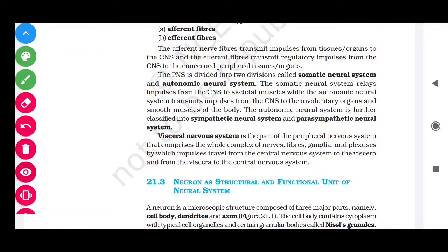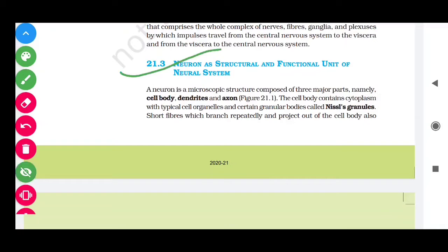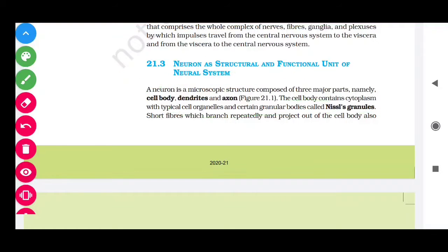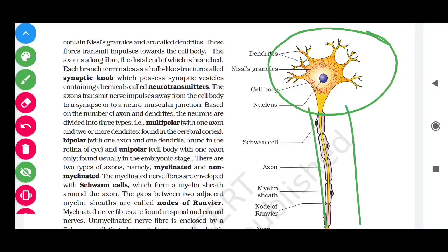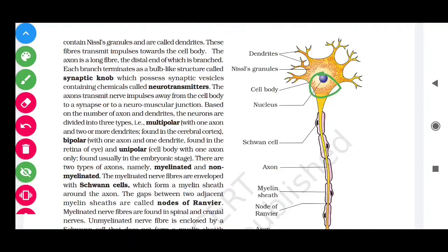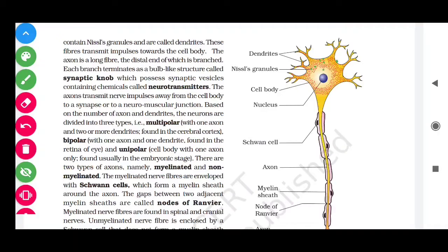A neuron is the structural and functional unit of the nervous system. It consists of a cell body, dendrites, and an axon. The cell body contains Nissl granules, which are ribosomal particles. Looking at the diagram: the axon is visible, the nucleus is in the cell body, the branching processes are the dendrites, and the small dot structures are Nissl granules.